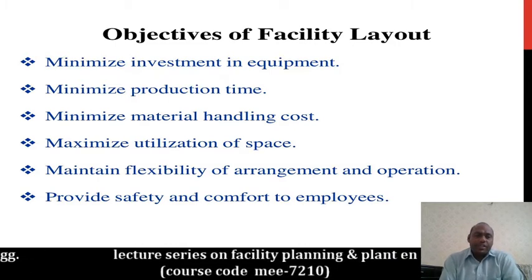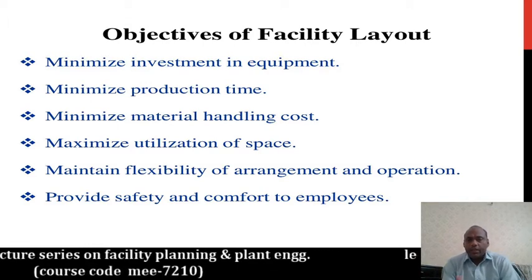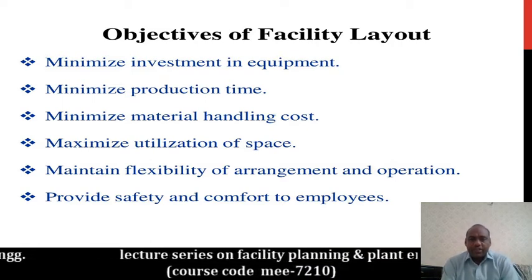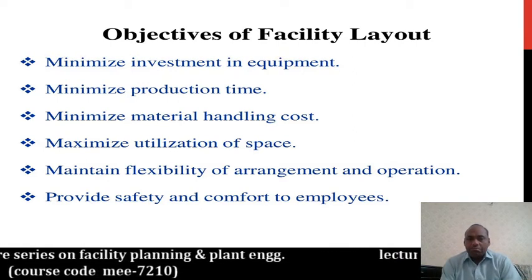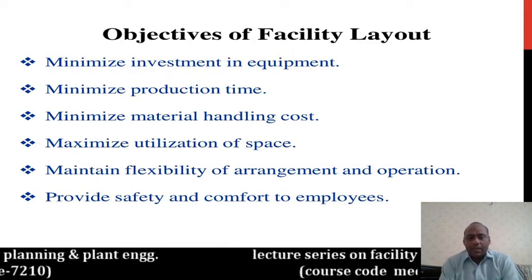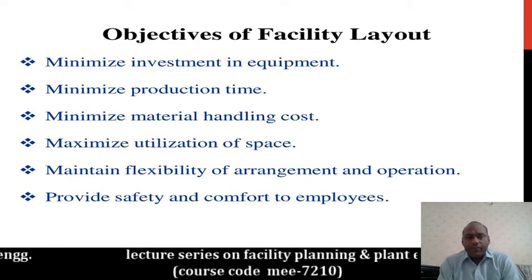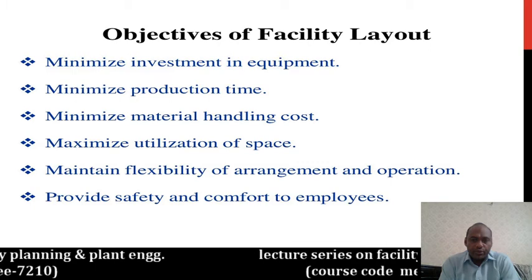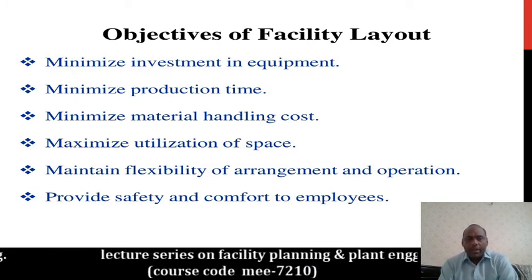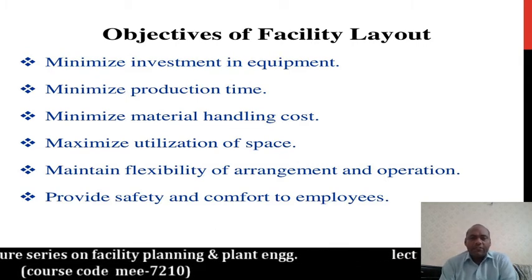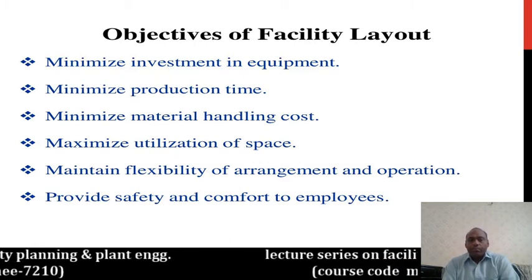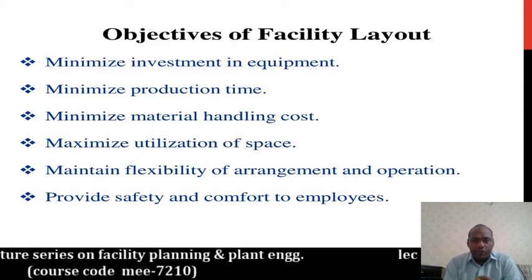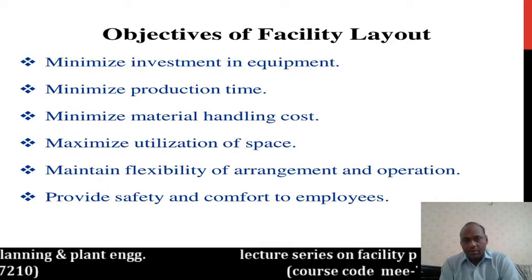What are the objectives of facility layouts? Generally, if you go into industry, different types of equipment are there related to manufacturing and material handling. The first objective is to minimize investment in equipment. In your planning, you should consider what current machines are available in your manufacturing area and minimize investment in equipment as much as possible.